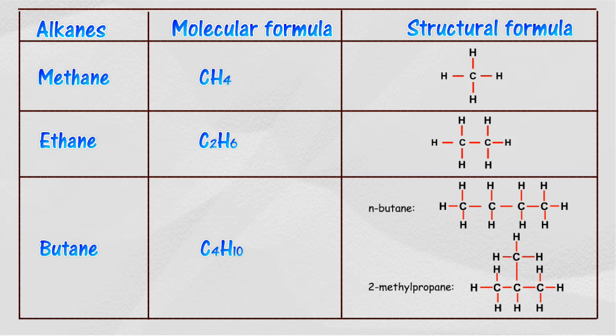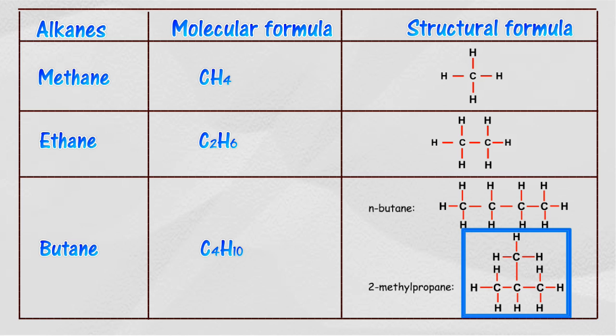The following table shows examples of molecular formula and structural formula of alkanes. For some molecular formulas, the structural formula may be different. For example, n-butane and 2-methylpropane have different structural formulas, even though both have the same molecular formula.